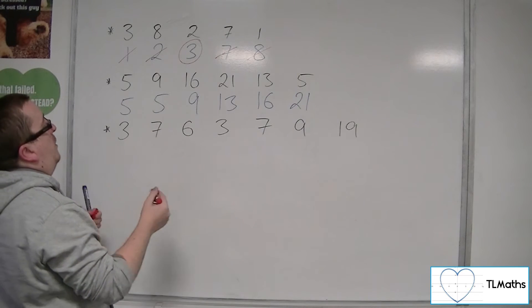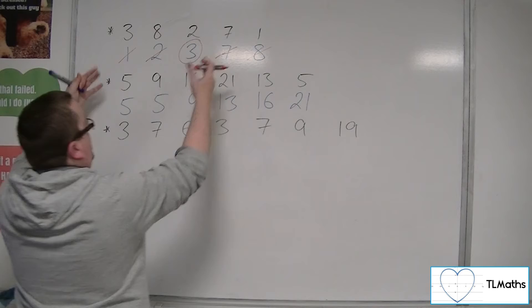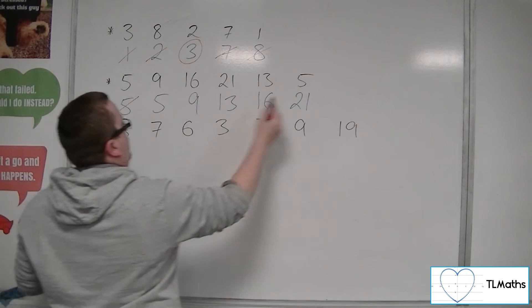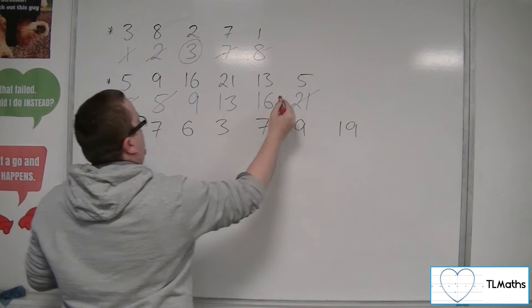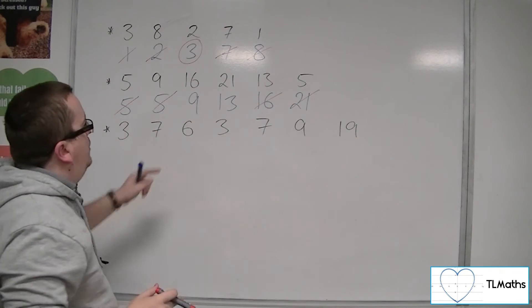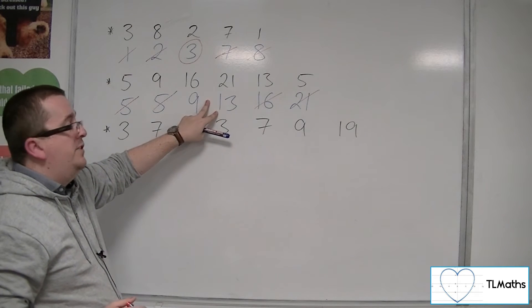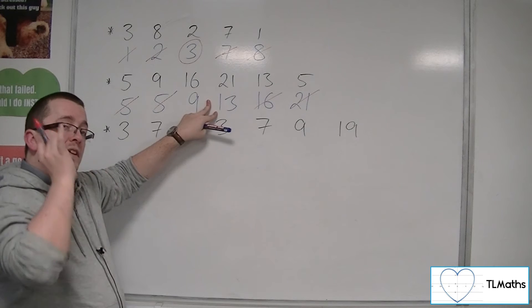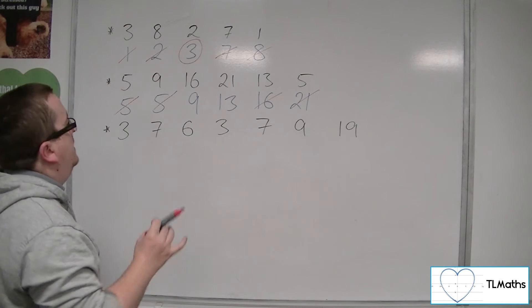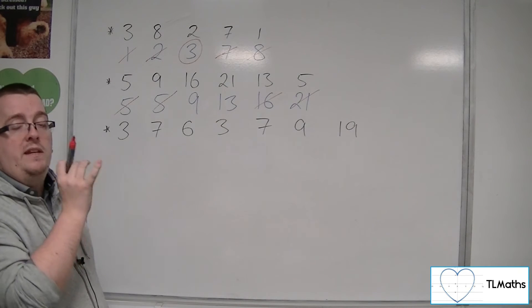So if we cross them off from left and right, as we did with the first example, the smallest and the largest, smallest and largest, and then you end up with 2 values left. Now whatever 2 values you get left, you want to find the number that is in the middle, the number that is halfway between 9 and 13.